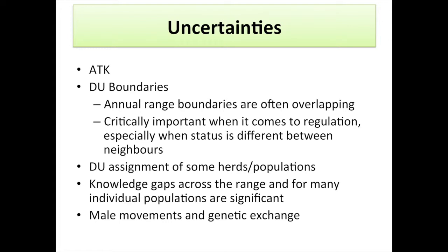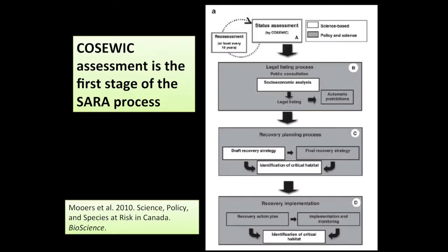There are uncertainties that exist: we did not have a formal process for bringing in Aboriginal traditional knowledge, but those of us with experience know that acknowledgement of different kinds of caribou in the same landscape is not uncommon, and hopefully that will come in with the status assessment. In terms of DU boundaries, while we use populations as boundaries there is the issue of them being overlapping, and some herd assignments we could not make because there is absolutely no information. There are knowledge gaps over the range, and one huge knowledge gap relates to male movements and male-mediated dispersal. We are now embarking on reassessments of some units for which there isn't even a recovery plan — that is the case for boreal caribou, though that is being finalized soon — and southern mountain caribou have never had a recovery plan.